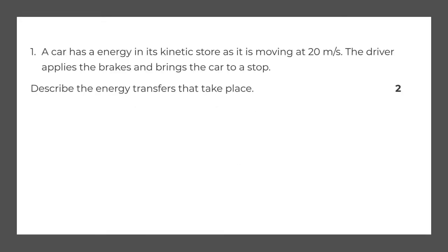Our first exam question states: a car has energy in its kinetic store as it is moving at 20 miles per second. The driver applies the brakes and brings the car to a stop. Describe the energy transfers that take place — it's worth two marks. So the car is moving, which means it has kinetic energy. The driver puts the car to a stop, and this means there's friction between the road and the tyres of the car. Because it's a sudden brake, the friction increases, which means there's more heat, and whenever we're talking about heat it must mean there's a thermal energy store. So the kinetic energy is transferred to the thermal energy store.